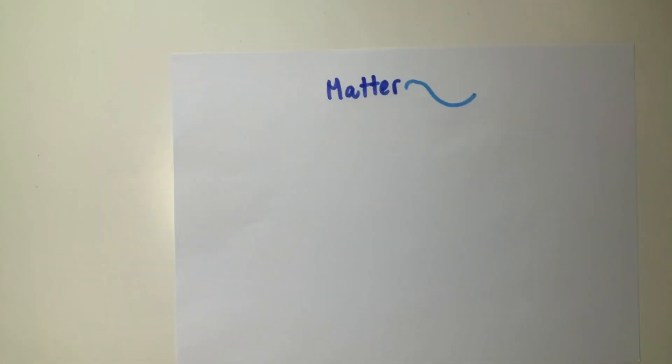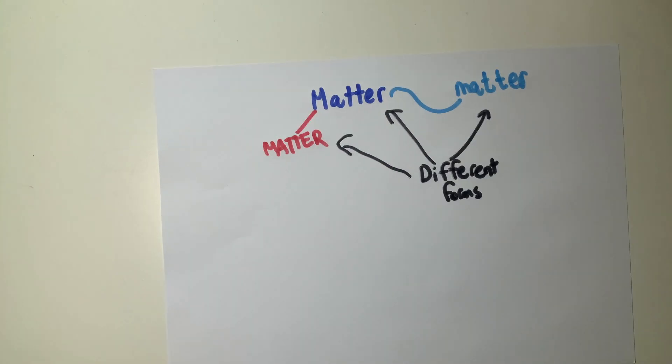Matter exists in a variety of different forms in the universe referred to as states of matter. Each state of matter has its distinct characteristics and attributes that define how it interacts both with itself and with the universe around it.